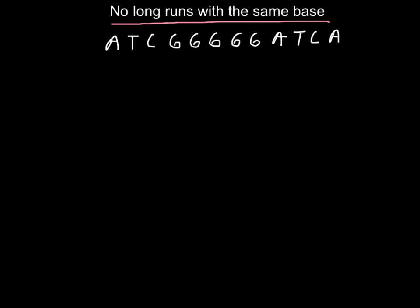As you probably notice, we have a repeat five times of the base guanine. Let me take only this fragment of our primer and base pair it with a DNA strand — so this is the DNA and here is our fragment: five repeats of the guanine base.